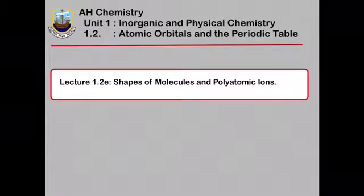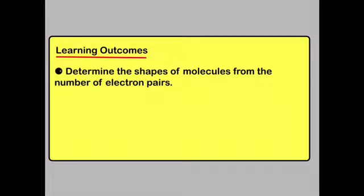In this lecture we're going to look at the shapes of molecules and polyatomic ions. By the end of this lecture you should be able to determine the shapes of molecules and polyatomic ions from the number of electron pairs surrounding the central atom.